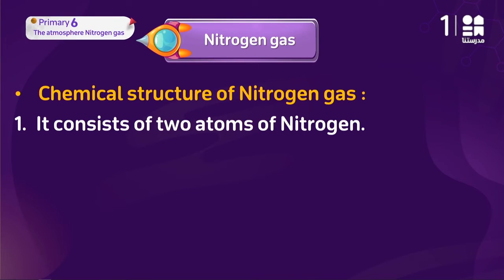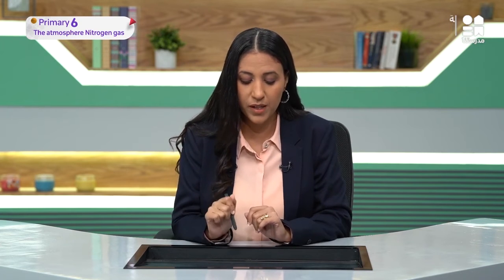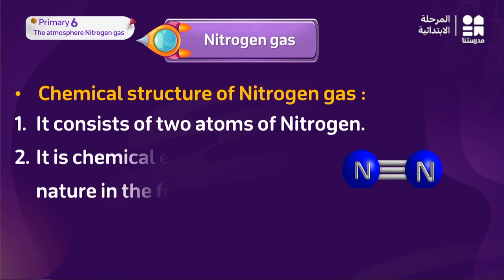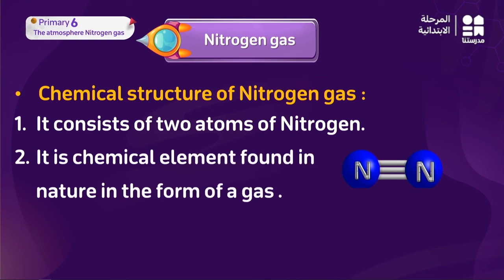Now, here is the chemical structure of nitrogen gas. Just as we discussed oxygen — its chemical structure consists of two oxygen atoms, O2 — and carbon dioxide consists of one carbon atom and two oxygen atoms. Nitrogen gas consists of two nitrogen atoms, as shown in the photo, and its formula is simply N2.